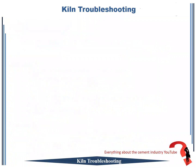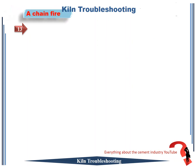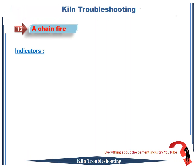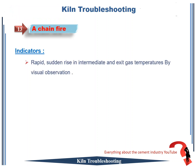Rotary kiln troubleshooting number 13: chain fire. The important indicators from this case: rapid, sudden rise in intermediate and exit gas temperatures by visual observation. Possible effects and dangers that occur in this case.